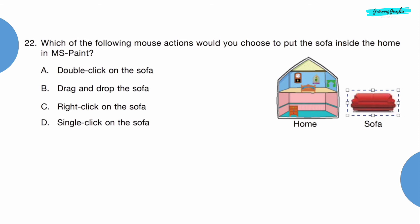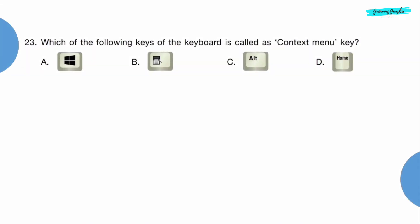Question 22: Which of the following mouse actions would you choose to put the sofa inside the home in MS Paint? Option B, drag and drop the sofa. Question 23: Which of the following keys of the keyboard is called as context menu key? Option B.